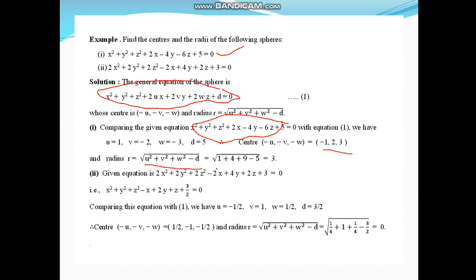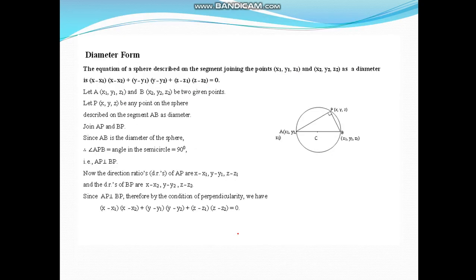Now second example. We can solve the problem here. Actually the problem is that x², y², z² coefficient is 2. So whenever you have to find center and radius, always coefficient must be 1, 1, 1. So divide each term by 2 and solve just like problem number 1.